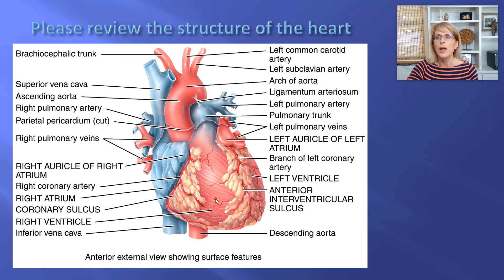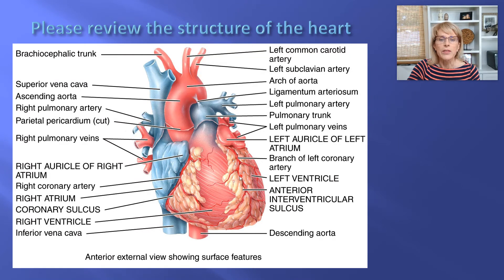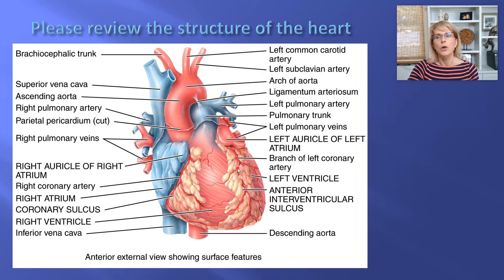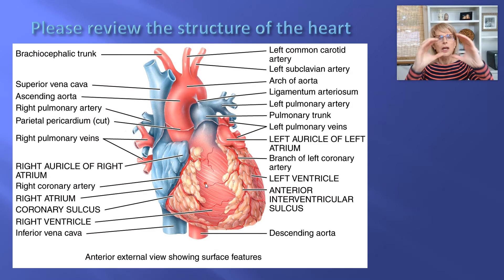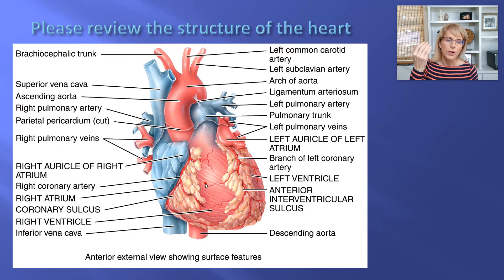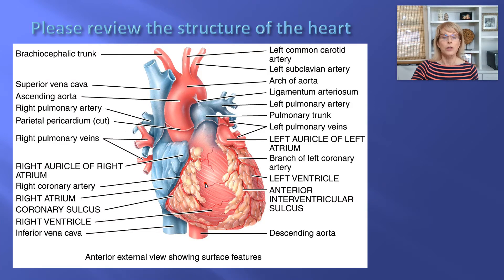A myocardial infarction happens when there is an obstruction — you could think of it as a clog — in one of these coronary arteries. The coronary arteries are pipes delivering oxygenated blood. If they get obstructed, no blood goes there, no oxygen goes there, and cells are going to die.